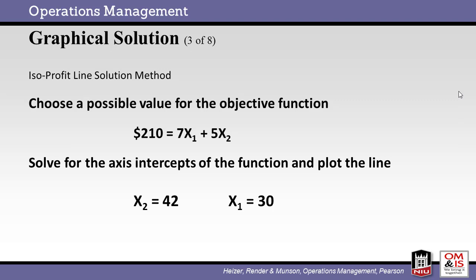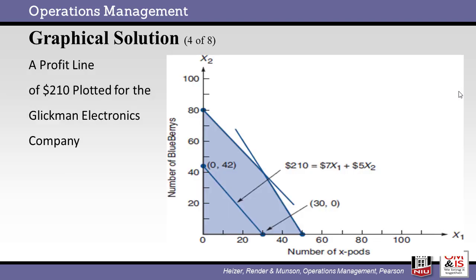Next, we pick a possible value for the objective function. In this case, we have chosen $120 as just a starting point. Try other guesses for profit and see if the outcome changes. Going back to our original objective function, we get 210 equals 7 times x1 plus 5 times x2. We can solve for the x and y intercept of this equation. The values turn out to be x1 equals 30 and x2 equals 42. The intercept defines the point where the line being plotted crosses the axis. Here we see the $210 profit line plotted on the graph. Note that this line crosses the x-axis at point 30 and the y-axis at point 42.